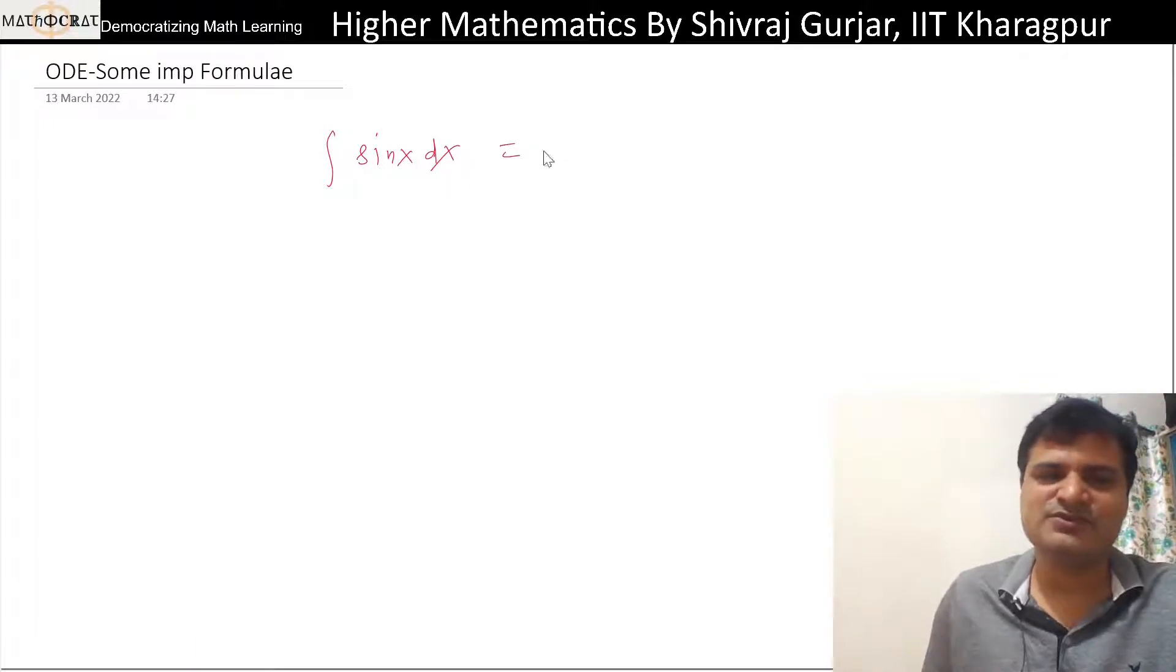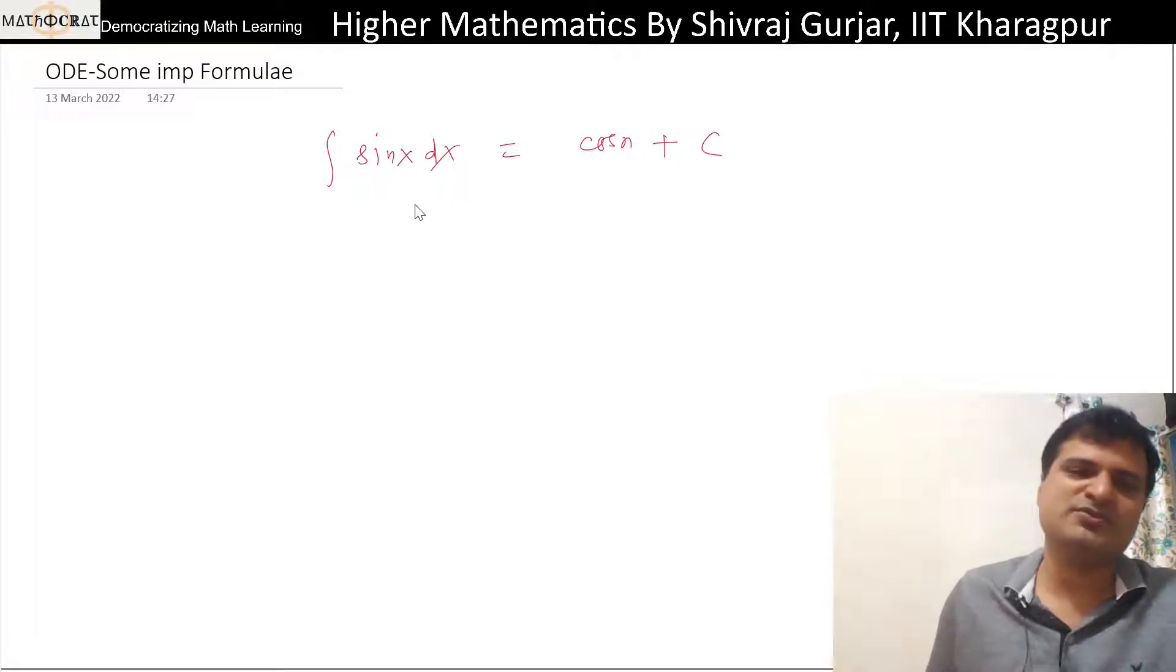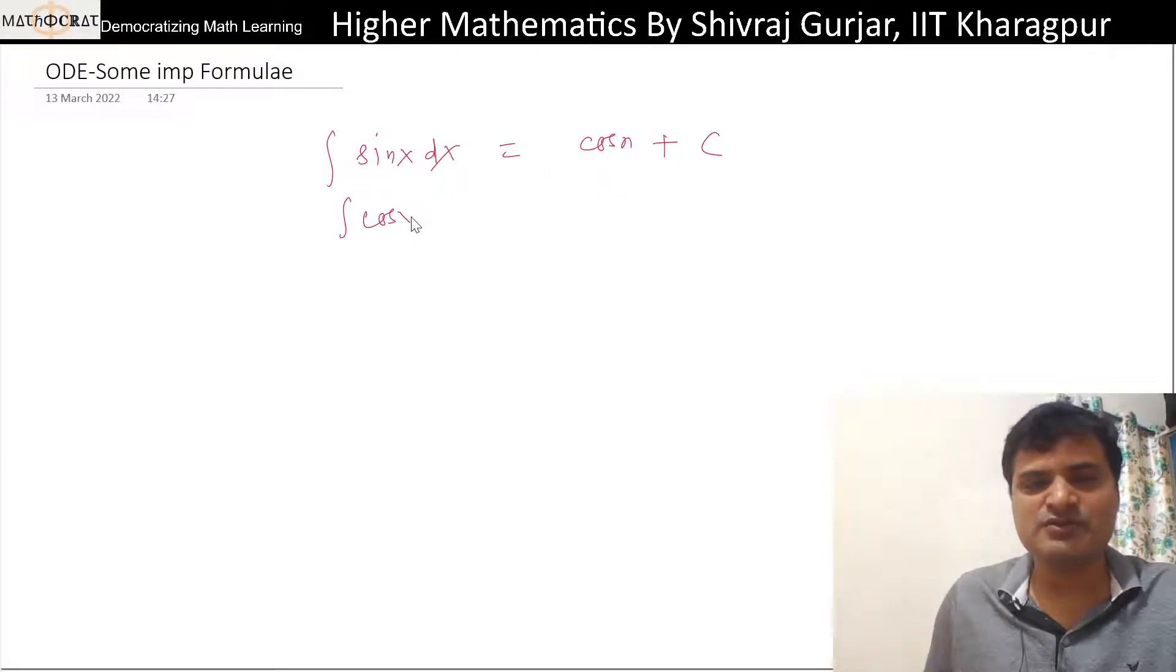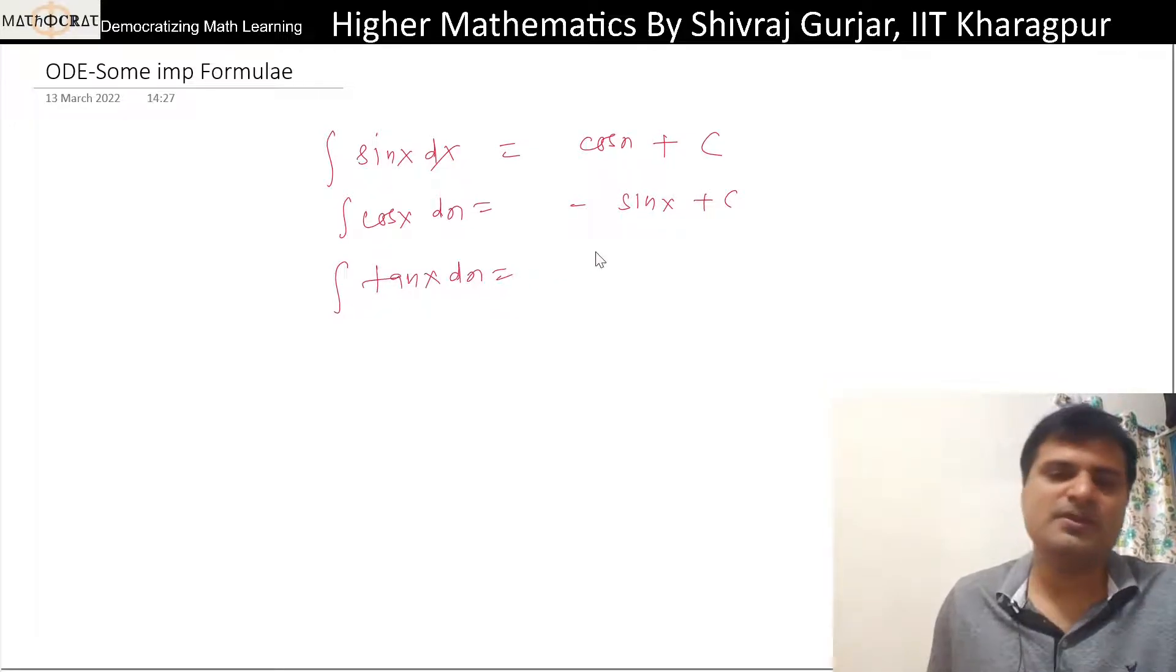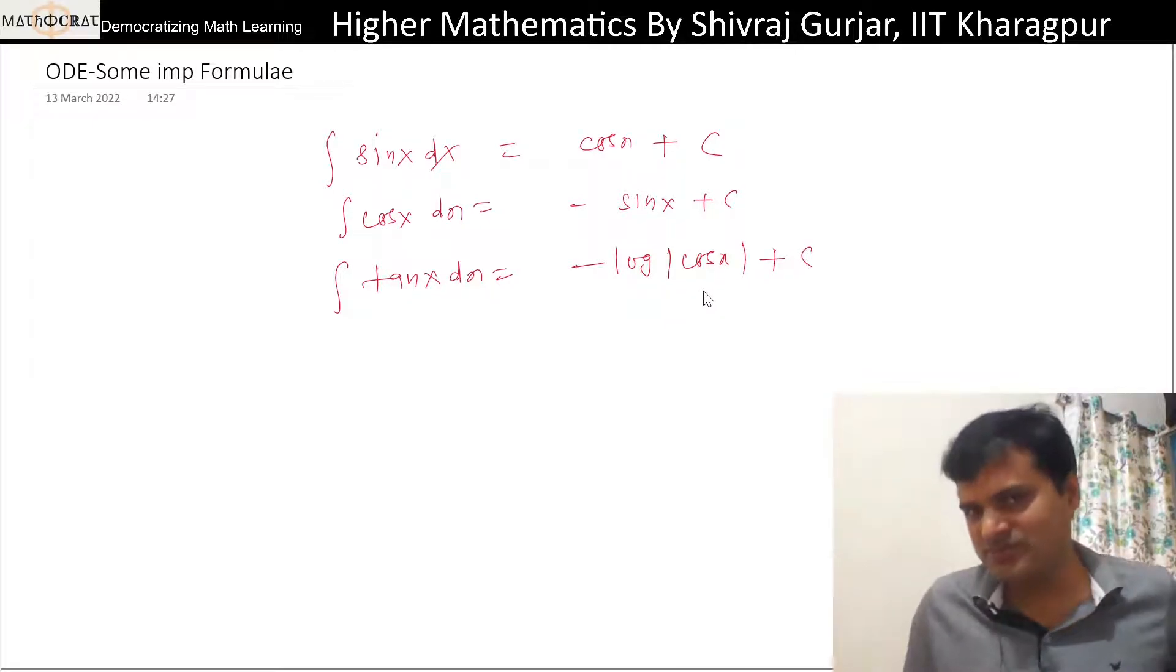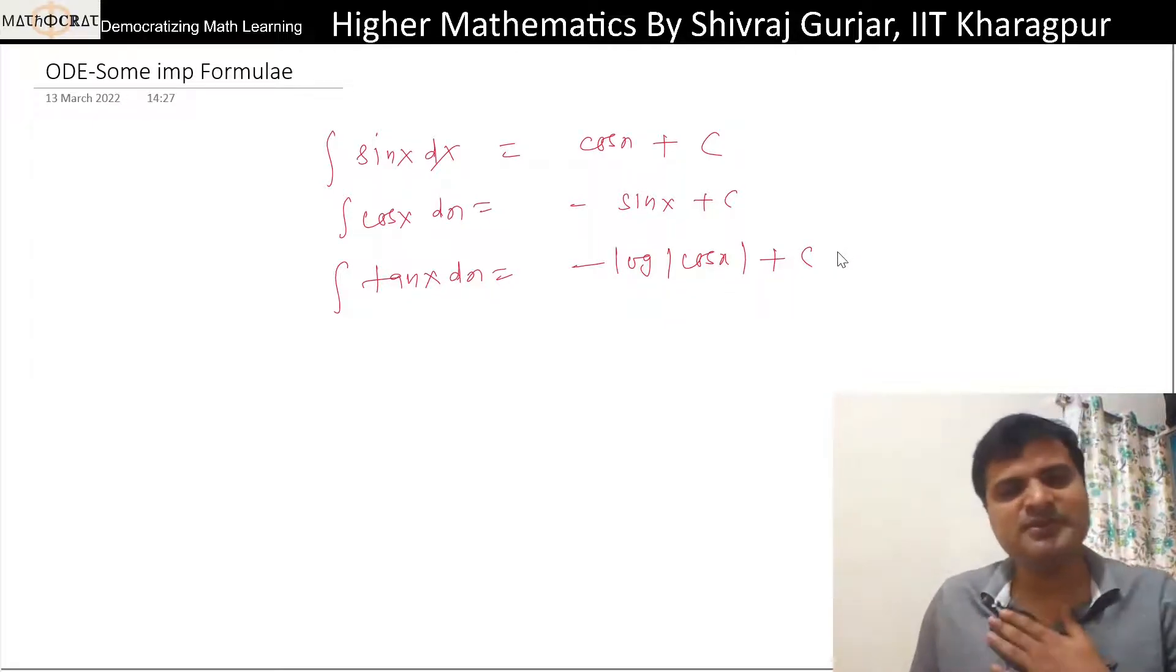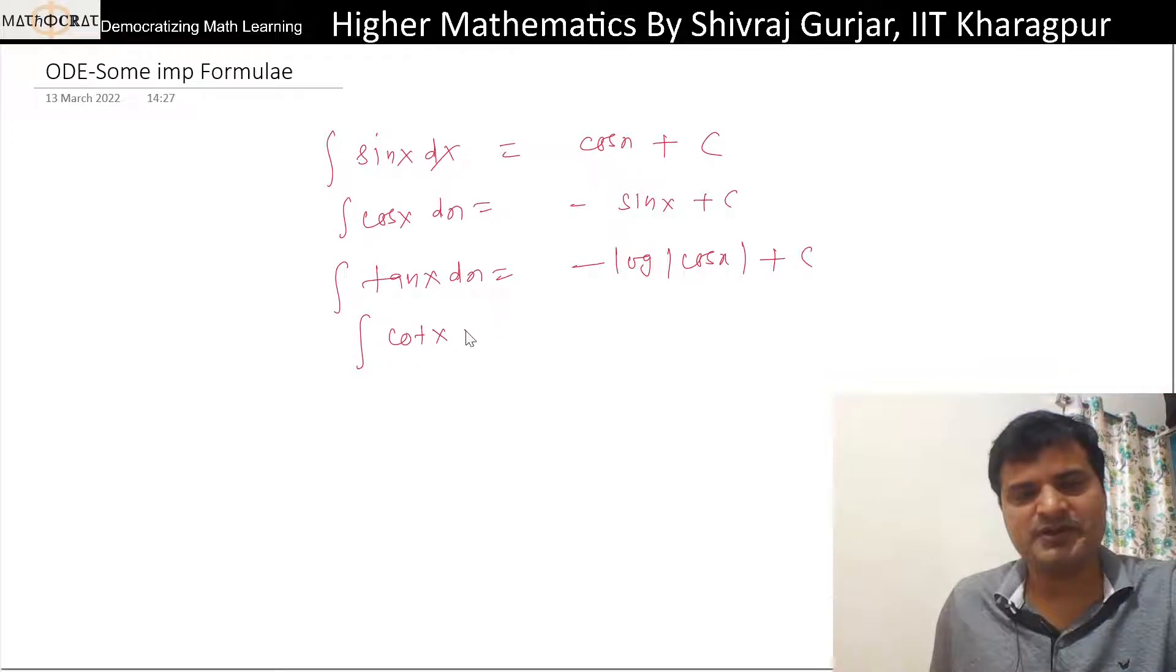Everyone must know these. Integration of sin x is cos x plus constant of integration. Cos x dx will be minus sin x plus some constant of integration. Tan x dx will be minus log |cos x| modulus or log |sec x| plus C, because logarithm should be defined with modulus in the real number system. Cot x dx will be log |sin x| plus C.